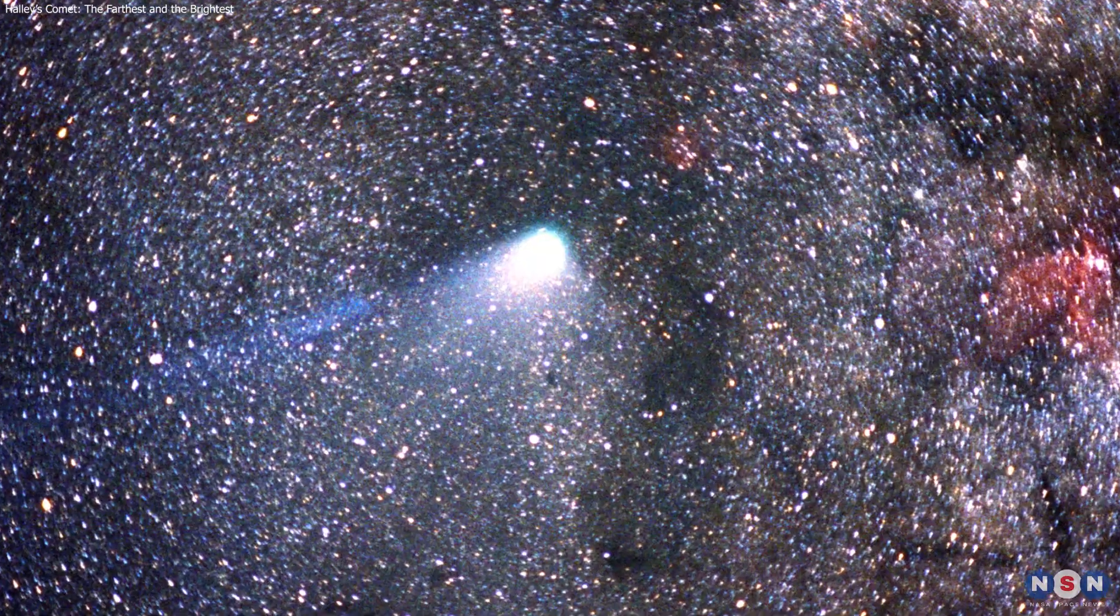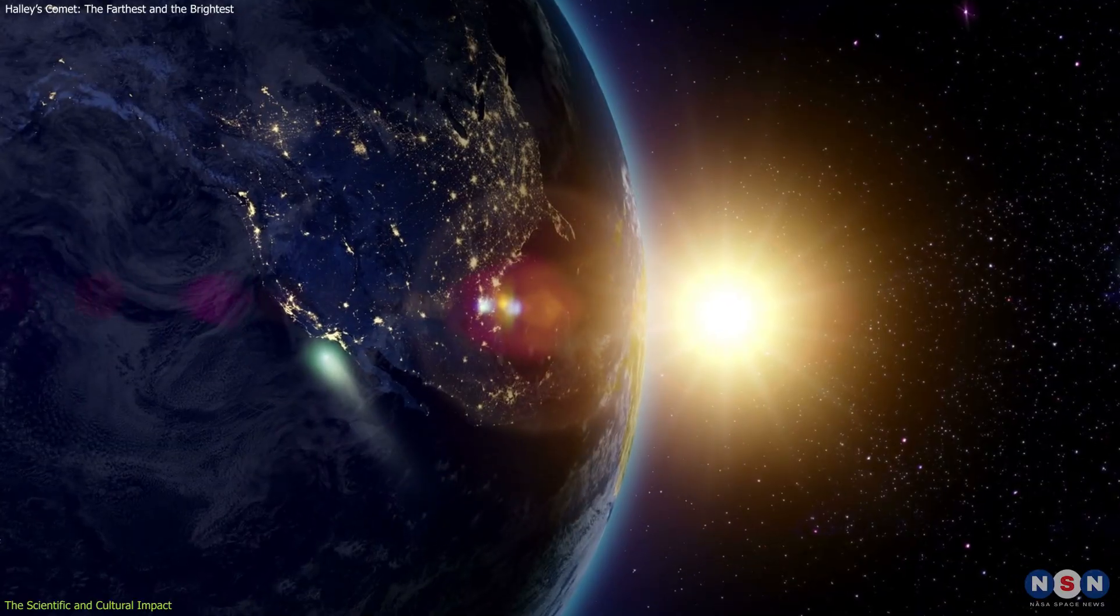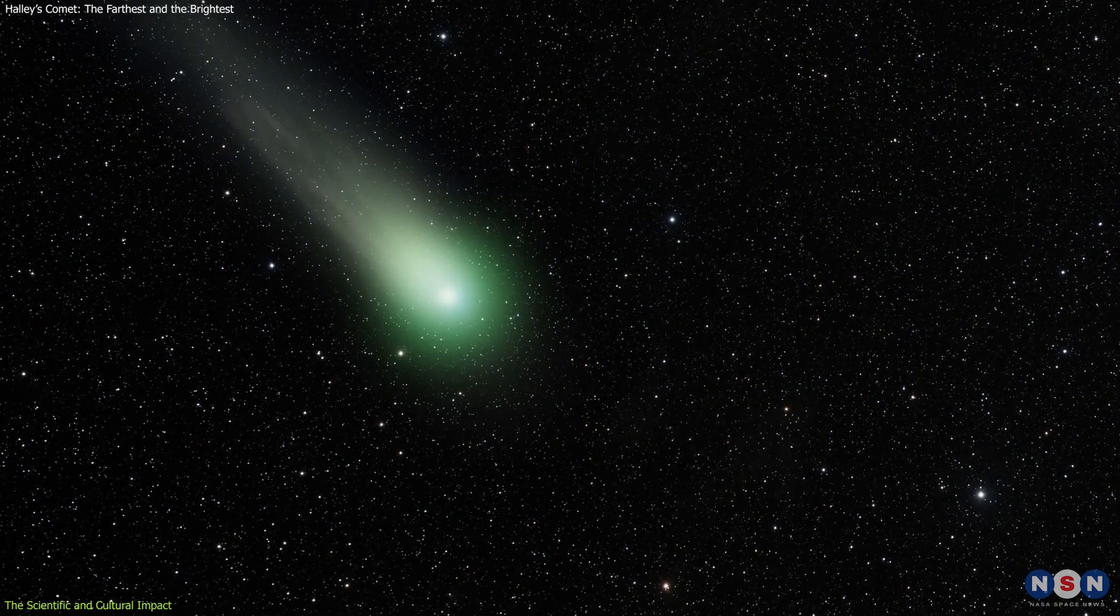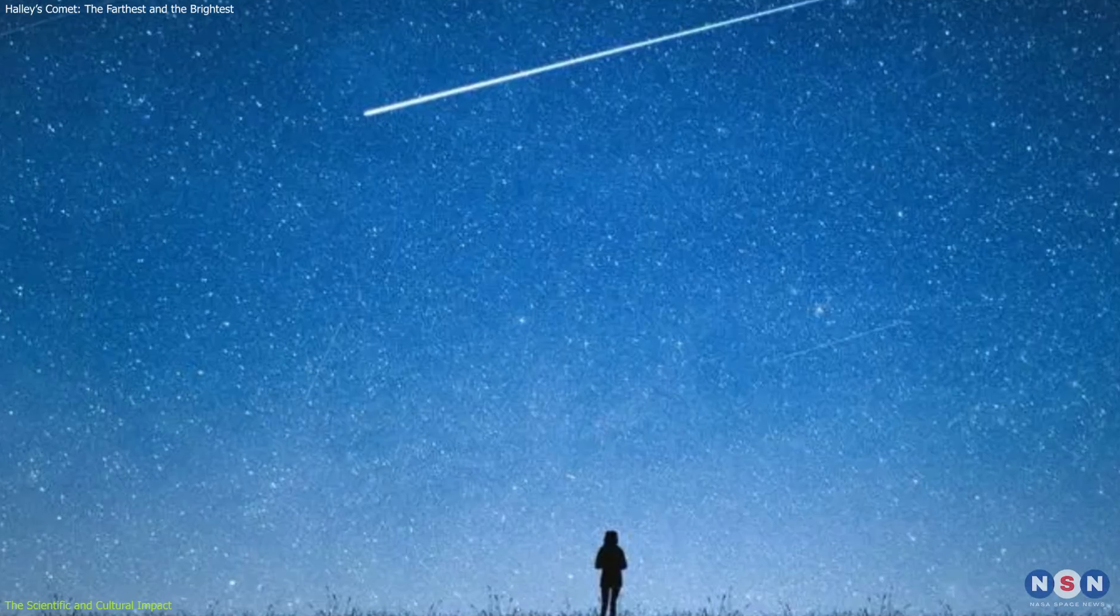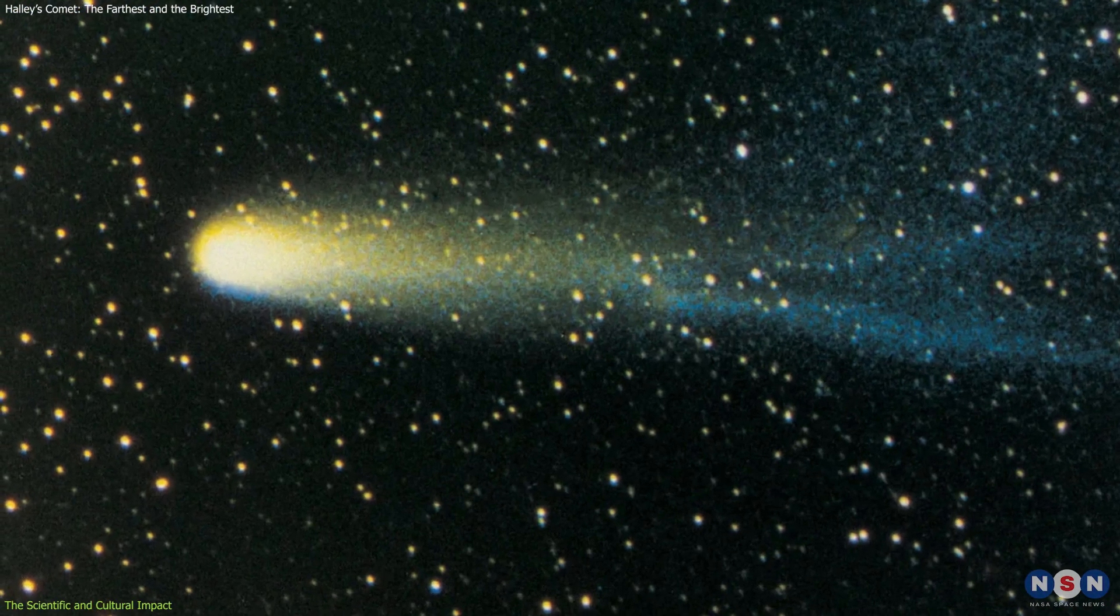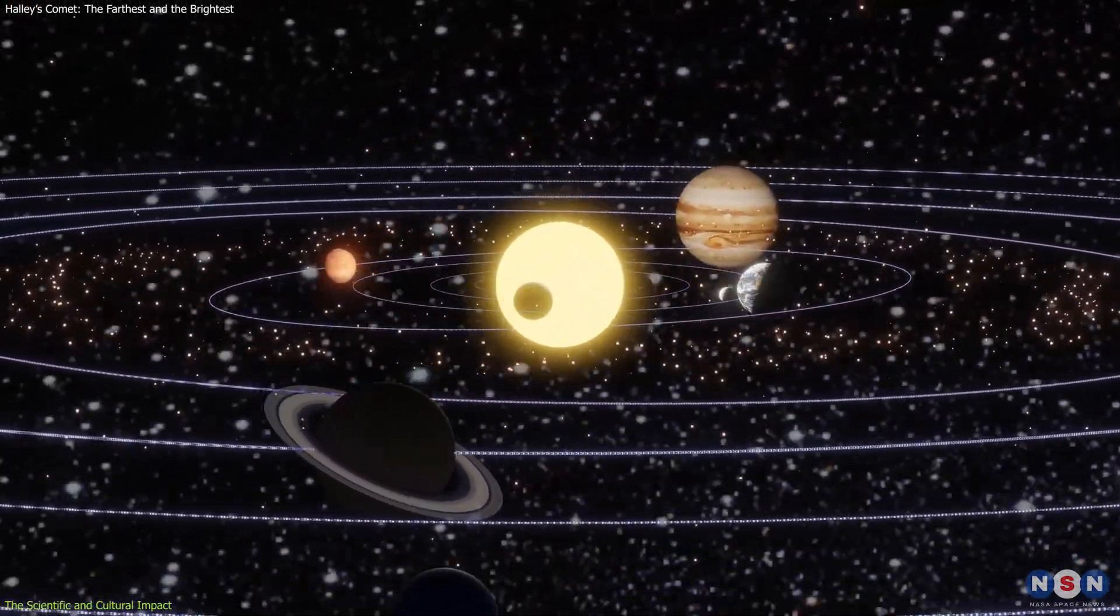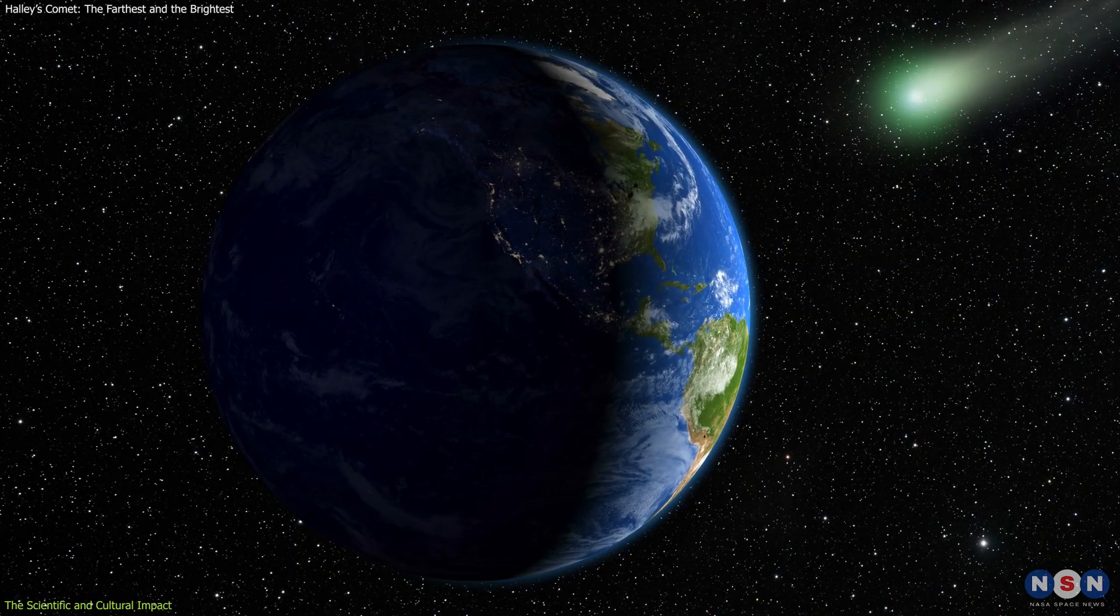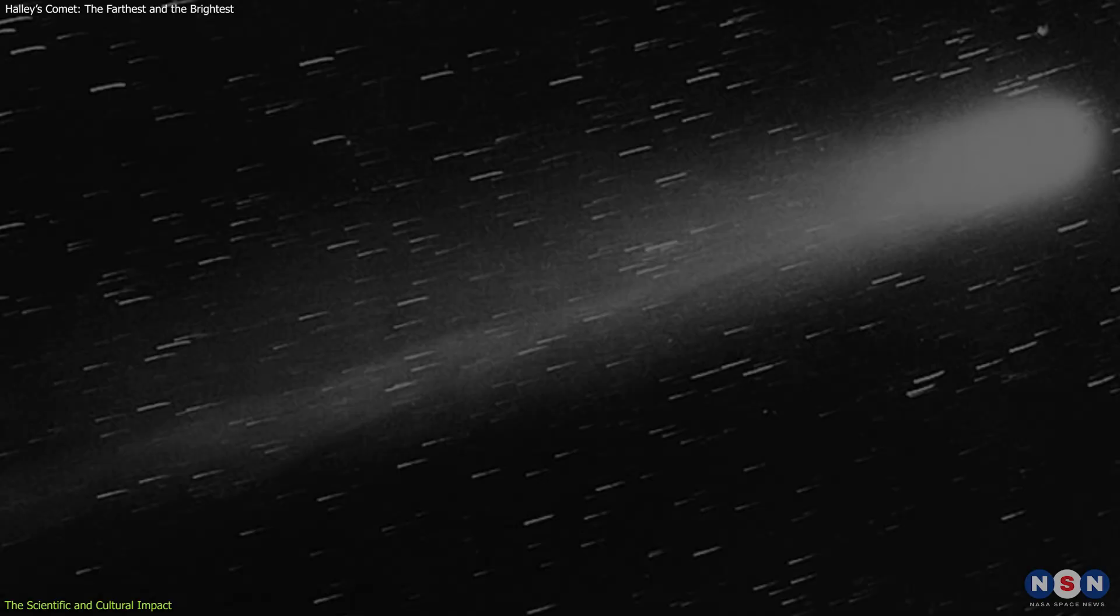The third thing we need to know about Halley's Comet is its impact on science and culture. Why is this comet so important and influential, and what can we learn from it? Well, the answer is a lot. Halley's Comet is not only a beautiful and fascinating object in the sky, but also a valuable and rich source of information and inspiration. The comet has played a significant role in advancing our knowledge and understanding of the solar system, the origin of life, and the history of humanity. It has also inspired our imagination and creativity, as well as our curiosity and exploration.